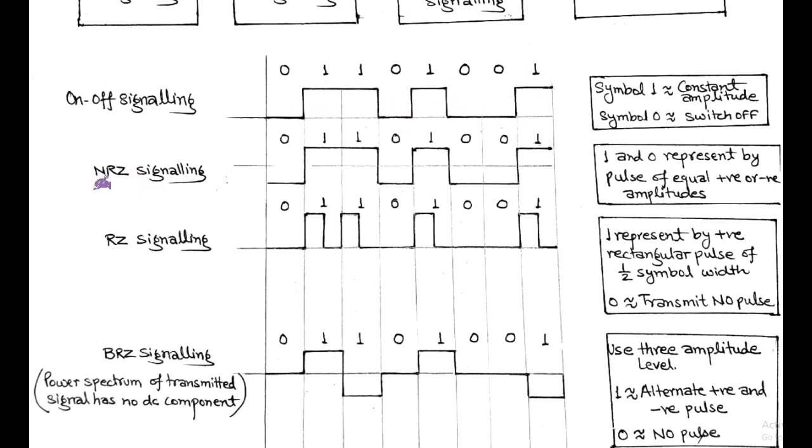Next is NRZ signaling, that is called non-return to zero. Here, symbol 1 and 0 are represented by pulse of equal positive and negative amplitude respectively, without returning to 0 position.